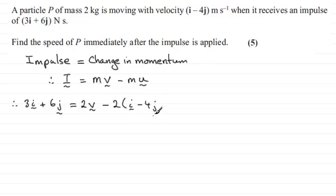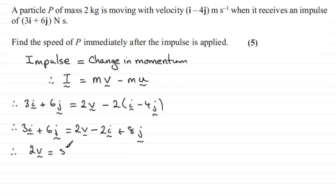And if we expand the brackets we've got 3i plus 6j equals 2v, and expanding the bracket here gives us minus 2i plus 8j. And if we add 2i and subtract 8j from both sides, we end up with 2v equaling 5i minus 2j.